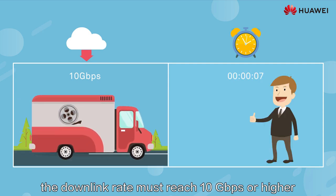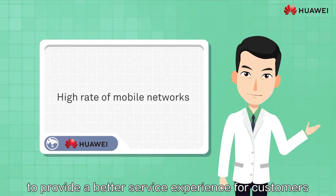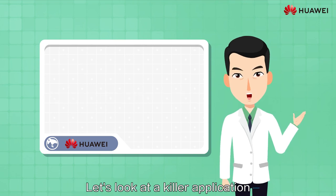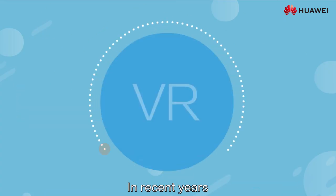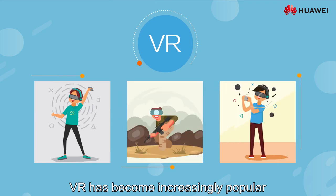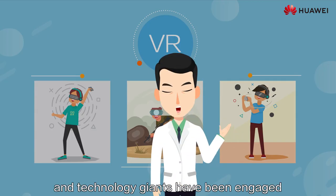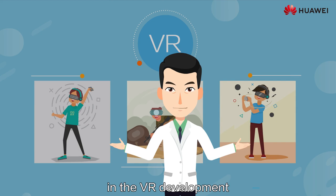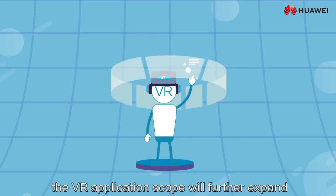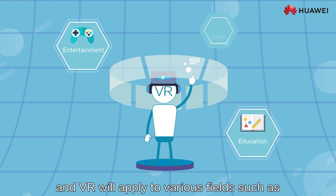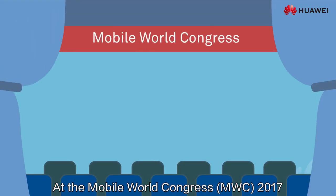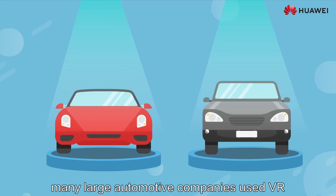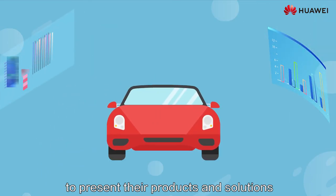Therefore, the downlink rate must reach 10 Gbps or higher to provide a better service experience for customers. Let's look at a killer application of mobile broadband in the future – VR. In recent years, VR has become increasingly popular, and many internet companies and technology giants have been engaged in VR development. At the Mobile World Congress MWC 2017, many large automotive companies used VR to present their products and solutions.